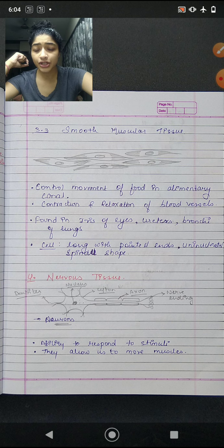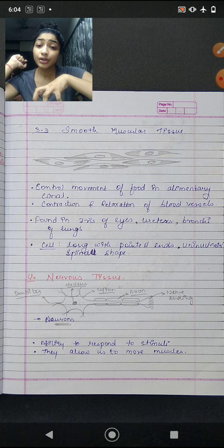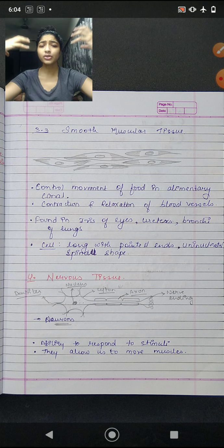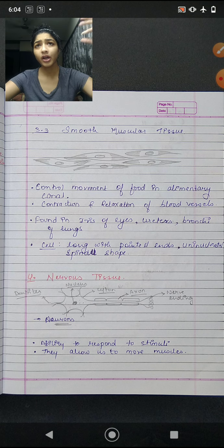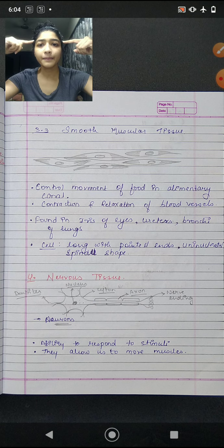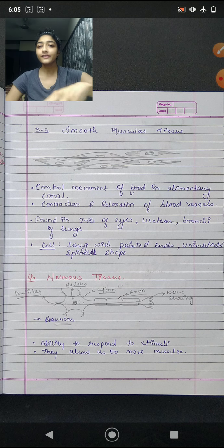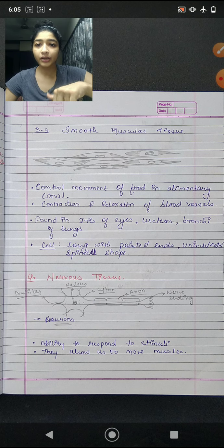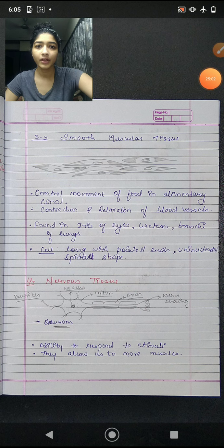Coming to last is nervous tissue, made up of neurons. Nervous tissue gives our body the ability to respond to stimuli from the outside environment — whatever happens in our surroundings, our body reacts to it. They also allow us to move our muscles; the brain sends messages through nervous tissue so that muscles can move.